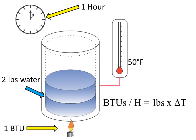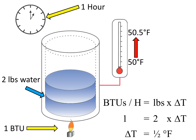In a third example, 1 BTU is applied to 2 pounds of water, initially at 50 degrees Fahrenheit. The duration is 1 hour. How many degrees will the water temperature increase? Substituting the numbers in the formula: 1 BTU per hour equals 2 pounds of water multiplied by delta T. Delta T equals 1 over 2, or half a degree Fahrenheit. The water temperature will increase from 50 to 50 and a half degrees Fahrenheit.